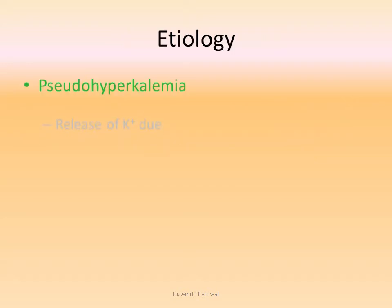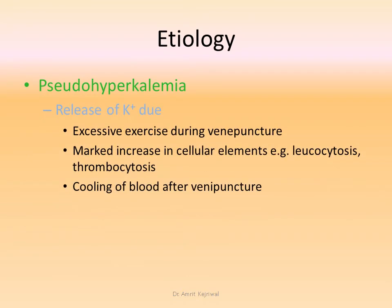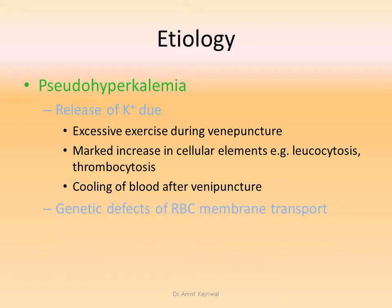Pseudohyperkalemia is due to release of potassium due to excessive pressure during venipuncture, marked increase in cellular elements such as leukocytosis, thrombocytosis, or cooling of blood after venipuncture. Genetic defects of RBC membrane transport also contribute to pseudohyperkalemia.